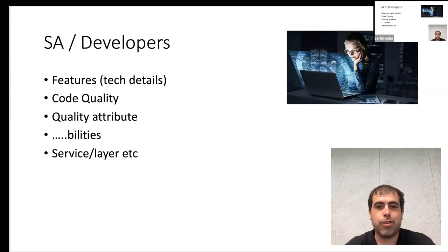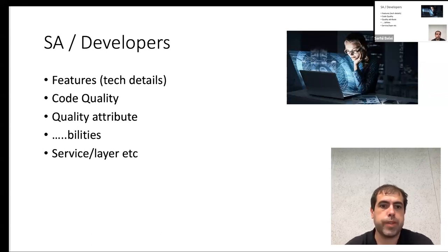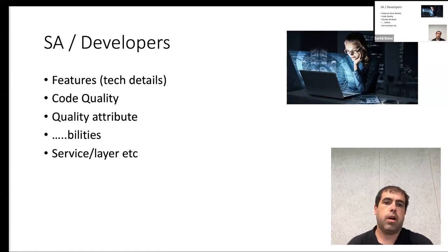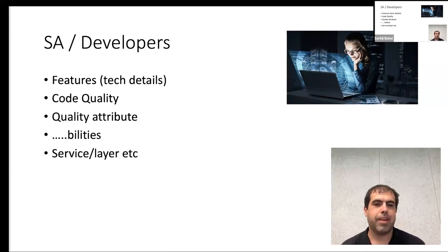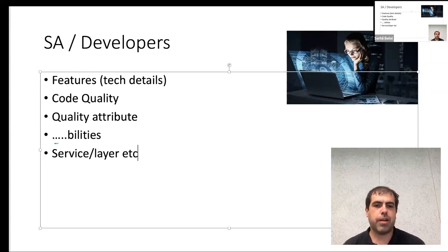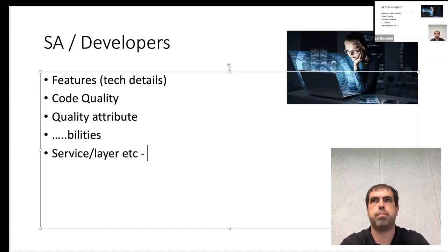As software architects, we focus mostly on technical details of a feature. When we hear 'feature' we ask a lot of questions to figure out what we can do and how we can deal with that. We focus on code quality, quality attributes — different '-ilities' like availability, maintainability, modifiability — services, layers, which in short is called structure or project structure.